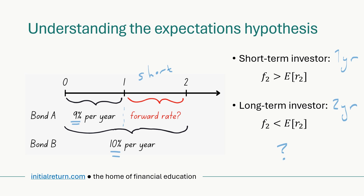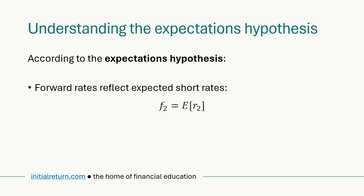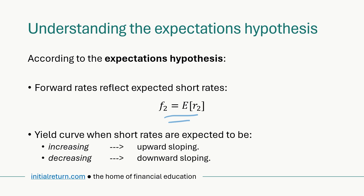So the market must balance these opposing interests: the short-term investor wants a forward rate higher than the expected short rate, while the long-term investor wants it lower. This is where expectations theory kicks in. The theory argues that with both types of investors present in the market, forward rates will exactly reflect expected future short rates — neither systematically above nor below.